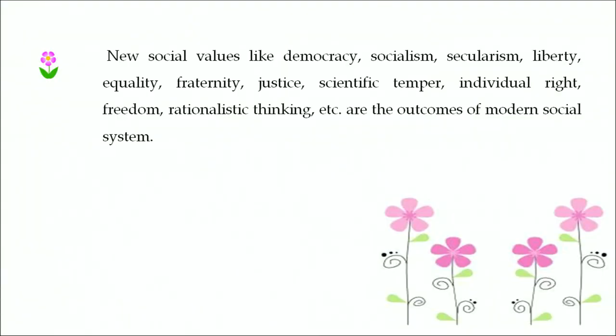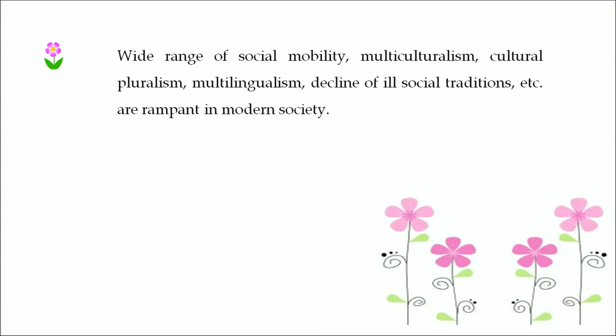New social orders like modernization, industrialization, urbanization, specialization, automation, globalization, privatization, liberalization, and planned development are the basic features of current society. New social values like democracy, socialism, liberty, equality, fraternity, justice, scientific temper, individual rights, freedom, and rationalistic thinking are outcomes of the modern social system and should be essential parts of social science teaching.